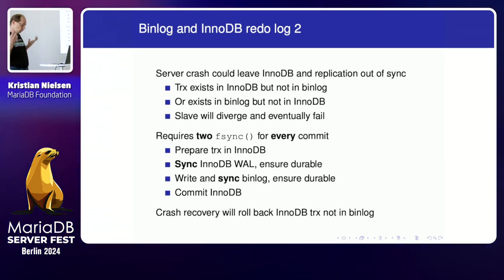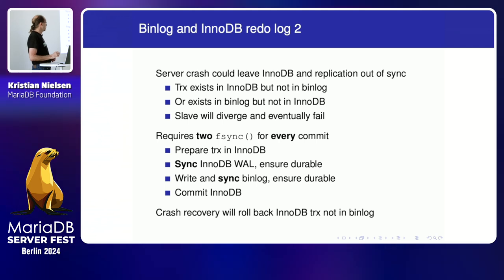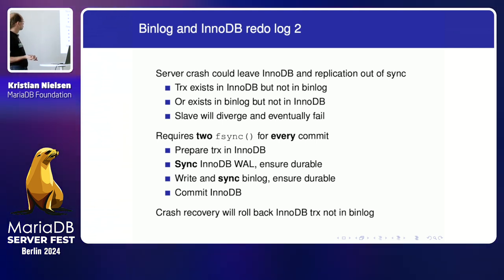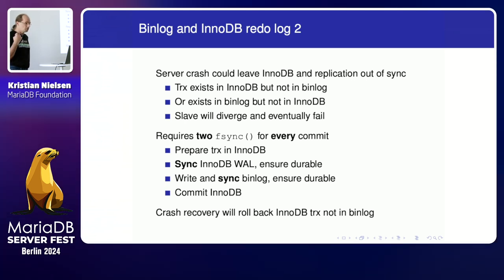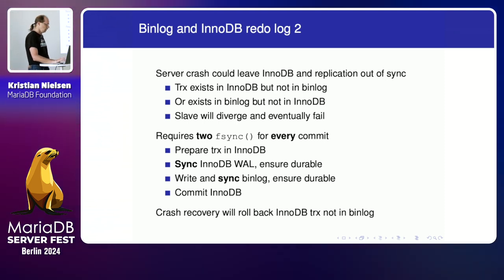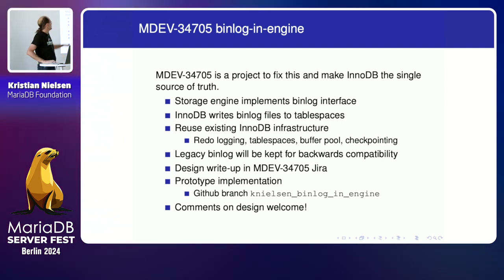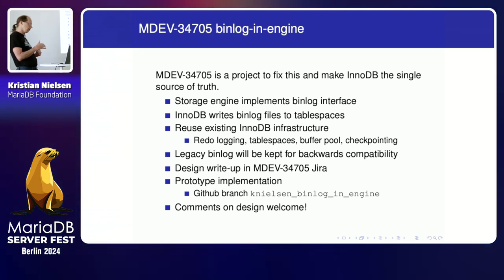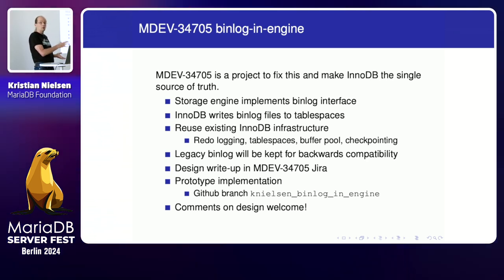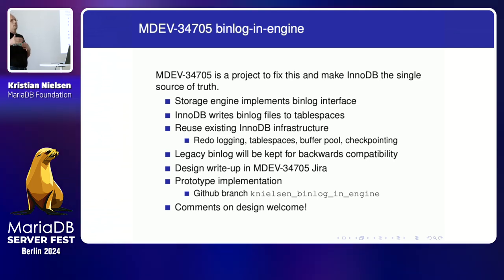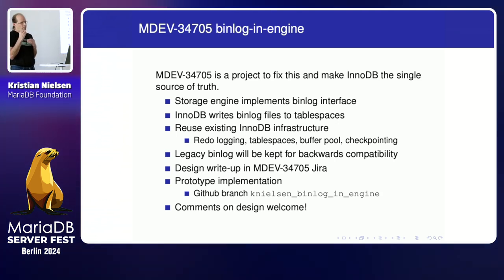We can fix this with two-phase commit between the binlog and InnoDB, but it's really expensive — we need to fsync twice for every commit. That's what we do now. Many big users I talk to are disabling durability because it's just too expensive, which means when they crash the slave may get out of sync and break. The solution I'm proposing is MDev 74705: put the binlog inside the engine. So just like InnoDB handles the transactional update of table spaces and data, it will also handle writing the binlog data. A binlog file will be an InnoDB tablespace — a new type of InnoDB tablespace.